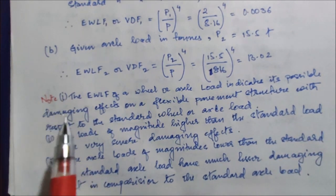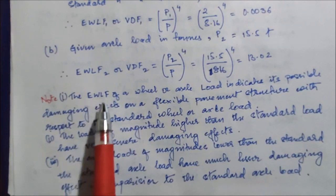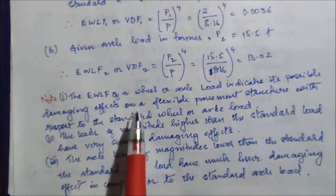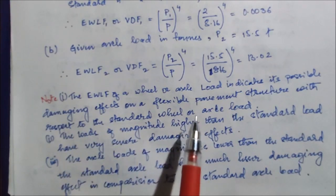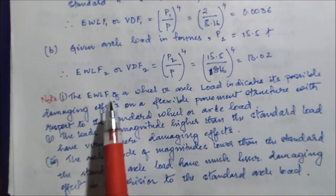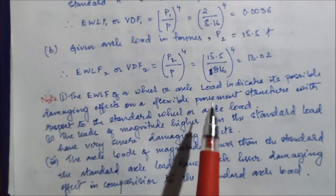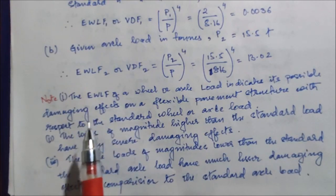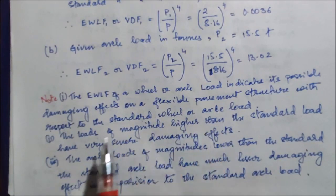Now let us note some important points. First: the EWLF or equivalent wheel load factor of a wheel or axle load indicates its possible damaging effects on a flexible pavement structure with respect to the standard wheel or axle load. The EWLF gives us an idea of how much effect a given load is going to cause to the flexible pavement structure, relative to the standard load.